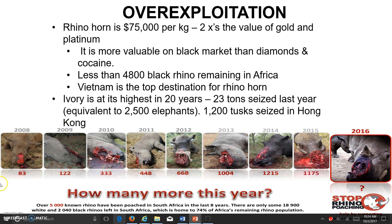As depicted here, this is the number of rhinos poached over a time frame. In 2008, 83 rhinos were documented. In 2012, 668 rhinos were documented as being killed for their horns. In 2015, 1,175 rhinos were documented as being killed for their horns. So within the last eight years, over 5,000 known rhinos have been poached in South Africa. There are only about 18,900 white rhinos remaining, and the number for black rhinos is even smaller at about 2,000 in South Africa.